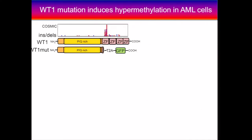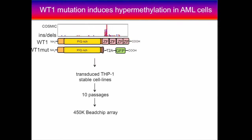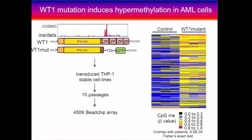To get at that question, we decided we needed to do wet lab experiments. We put a mutant form of the WT1 protein in THP1 cell lines — an AML cell line that is wild type for WT1 — and after 10 passages we measured the methylome using 450K arrays, the same array used for the TCGA patients. This heat map compares the controls to the WT1 mutants, and you can see an increase in DNA methylation going from controls to WT1 mutants. Furthermore, the genes being methylated in the cell lines showed very significant overlap with the genes methylated in the TCGA patients with the WT1 mutation, suggesting a similar mechanism is operating in patients.